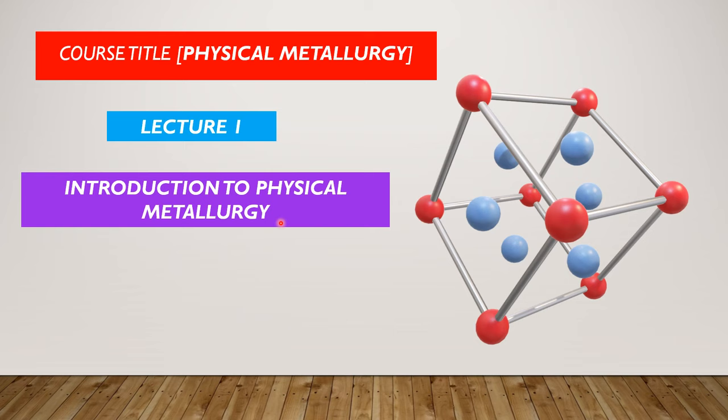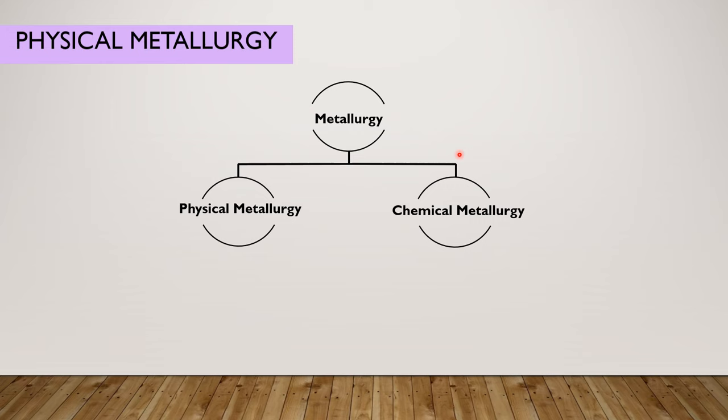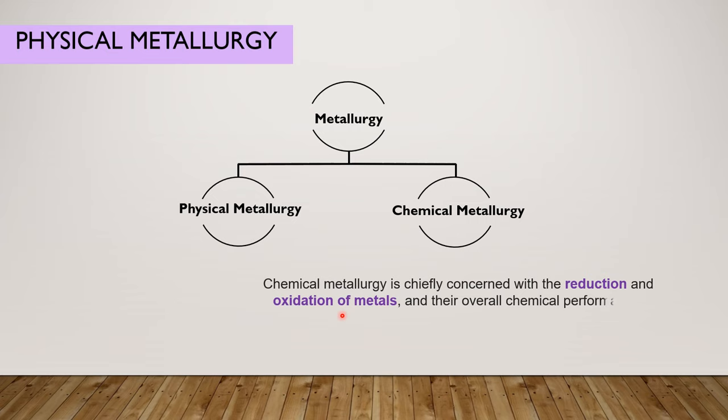So, let's start this course by defining the term physical metallurgy. Physical metallurgy is one of the broad categories of metallurgy. The second one is chemical metallurgy, which is chiefly concerned with the reduction and oxidation of metals and their overall chemical performance.